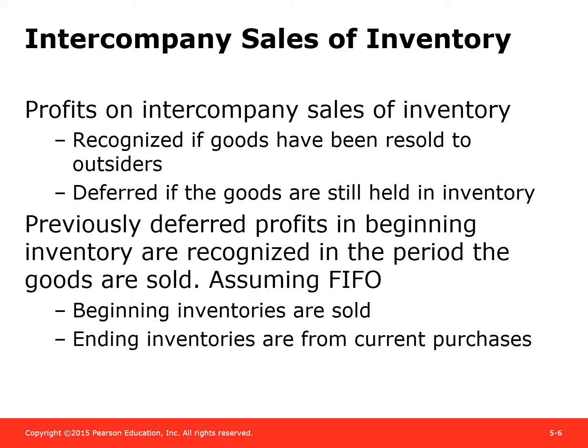For any inventory that remains with either the parent or the subsidiary, we are going to defer that gain. Our assumption here is that we're using first-in, first-out to account for inventory, which means the beginning inventory is assumed to have been sold, and the ending inventory comes from current sales.